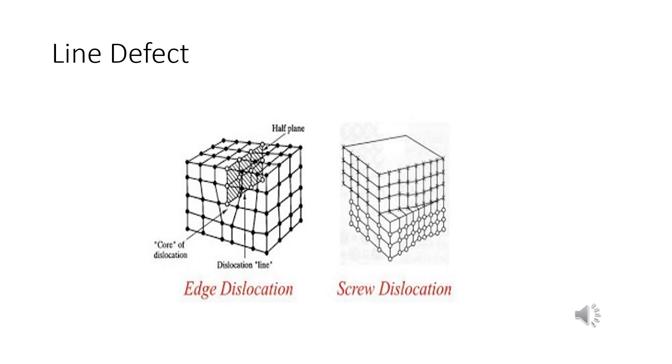The next one is line defect. First, we study point defects. Under point defects, we study stoichiometric defects, non-stoichiometric defects and the impurity defect. Then, now we are going to discuss about line defect. Line defects are the irregularities or deviations from ideal arrangement in entire rows of lattice points. There are three types.